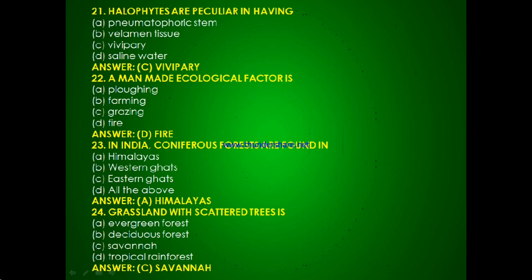Question 20: A man-made ecological factor is — flowing, farming, grazing or fire? The answer is fire. Question 21: In India, coniferous forests are found in — Himalayas, Western Ghats, Eastern Ghats or all of the above? The answer is A, Himalayas.